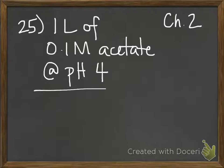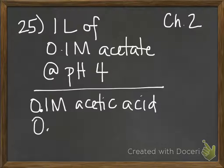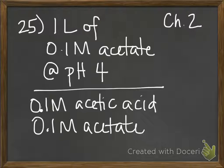What you're starting with is 0.1 molar acetic acid and 0.1 molar acetate. And you're told the pKa of acetic acid is 4.76.